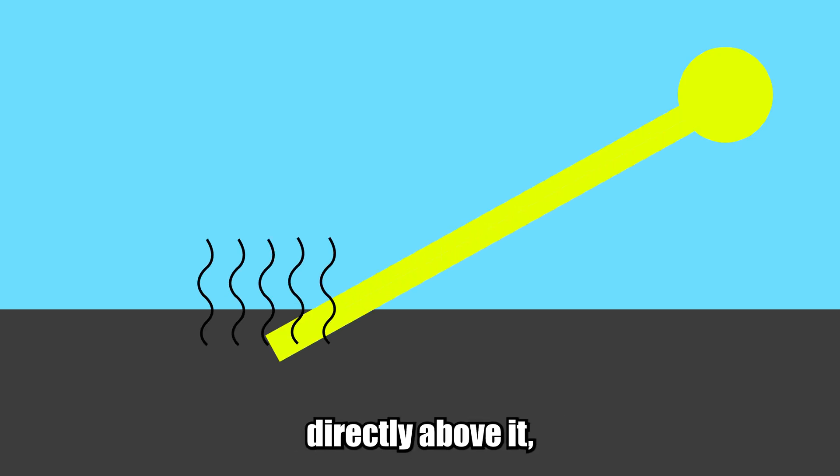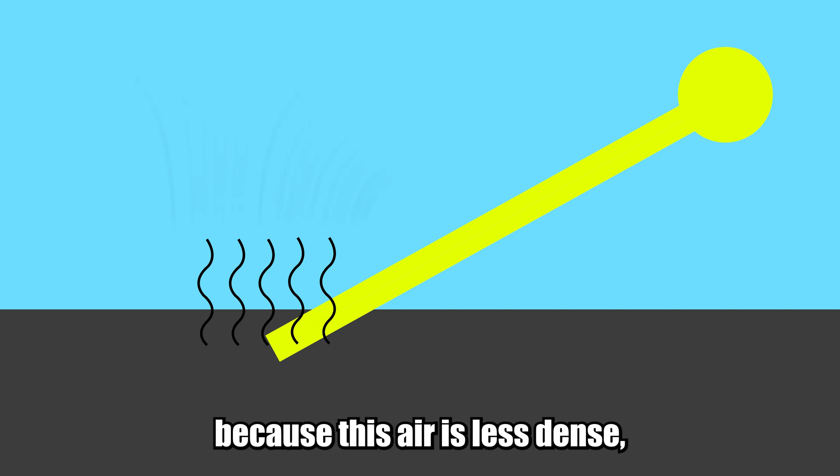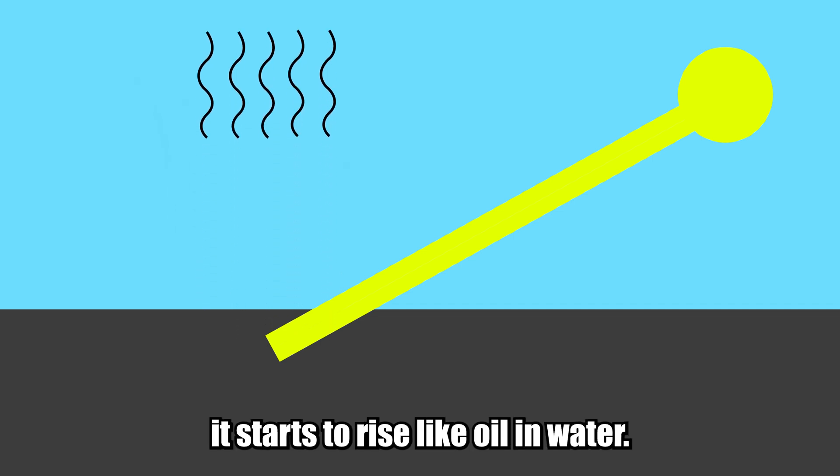When the sun heats the ground, the ground heats the air directly above it, which becomes less dense than the air around it because of its heat. Because this air is less dense, it starts to rise like oil and water.